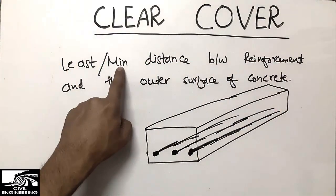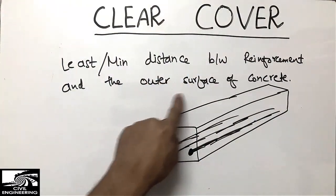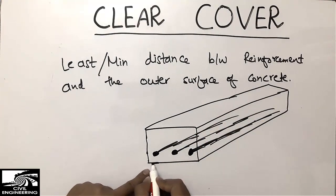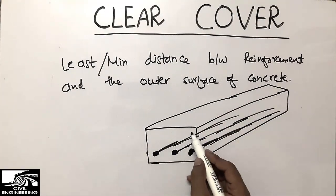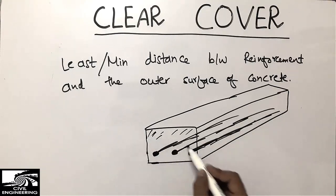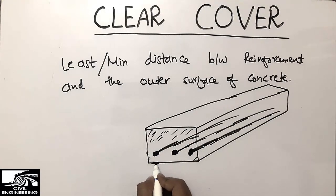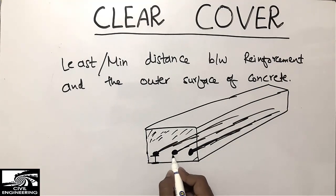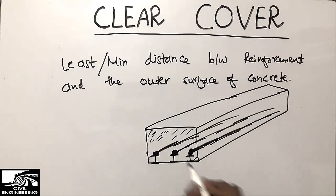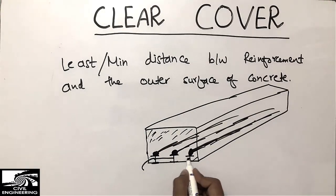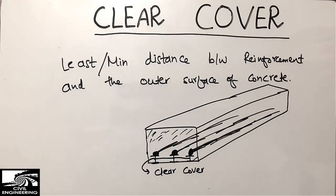So clear cover is the least or minimum distance between the reinforcement and the outer surface of concrete. When we place the reinforcement and fill the beam with concrete, the distance between the outer surface of the concrete and the reinforcement is what we call the clear cover.